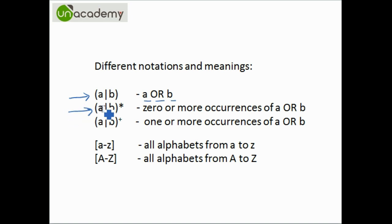Another one is a vertical bar b in curvy brackets with a star. This star means zero or more occurrences of whatever it is following. Here it is following a or b, so this means zero or more occurrences of a or b. Similarly, there is another notation plus that means one or more occurrences of whatever it is following.